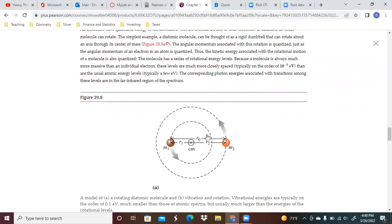The angular momentum associated with this is quantized, just as the angular momentum of an electron in an atom is quantized. The kinetic energy associated with the rotational motion is also quantized. The molecule has a series of rotational energy levels, and because a molecule is always much more massive than the individual electron, these levels are much more closely spaced than the usual atomic energy levels. The corresponding photon energies associated with transitions among these levels are in the far infrared region of the spectrum.